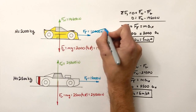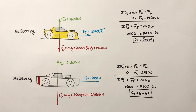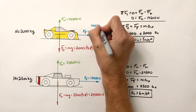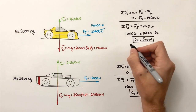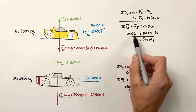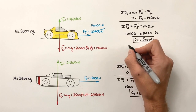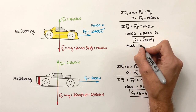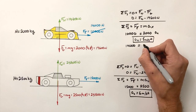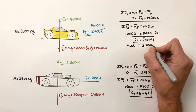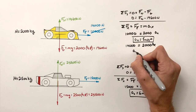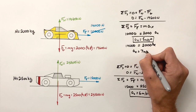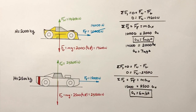He hits the NOS! The engine all of a sudden starts producing more force forward — now it's producing 14,000 newtons of force forward. This car is going to go ripping down the road. We've changed the force forward on the car from 10,000 to 14,000 newtons. This is a serious race for serious street cred. We find the acceleration in the x-axis is now 7 meters per second squared. He's going to pull through — he's going to win the race!